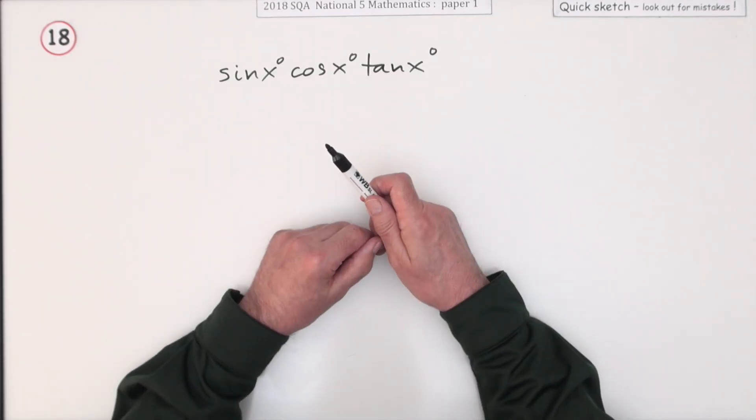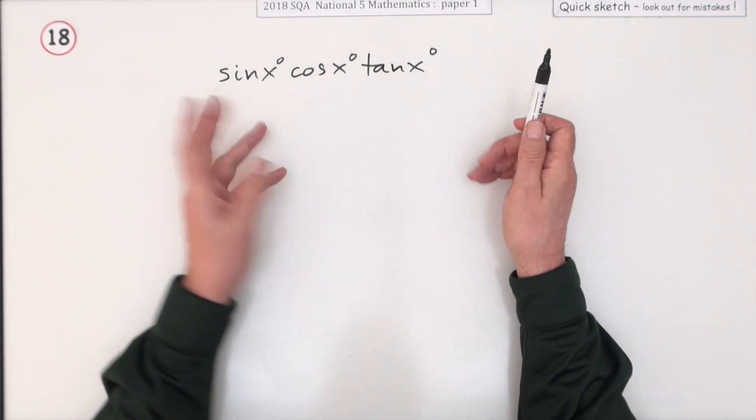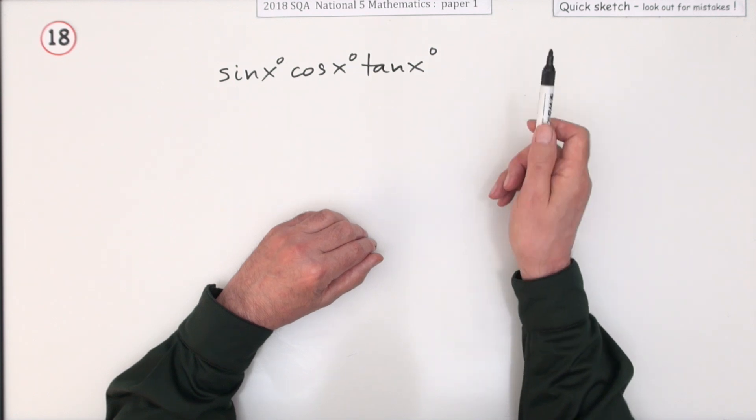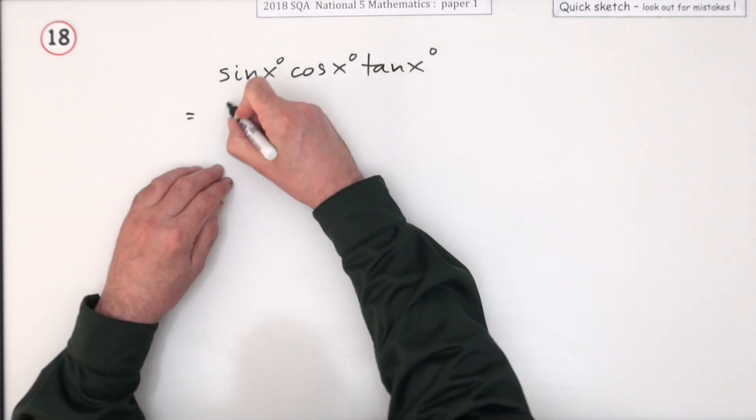Oh you only know two identities. Sin squared and cos squared makes one. That won't be involved. And tan is sin over cos. So that's what you're going to use.